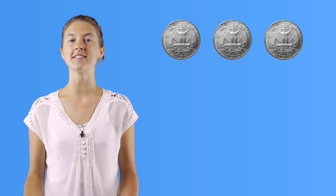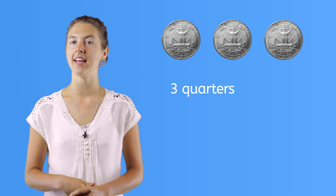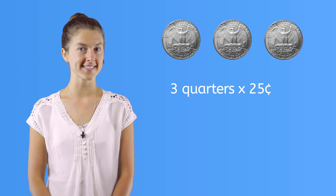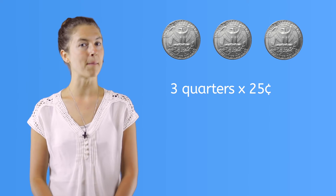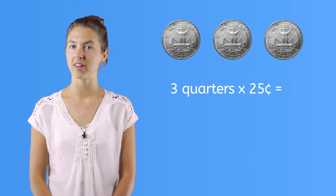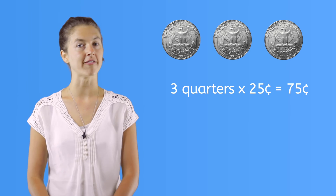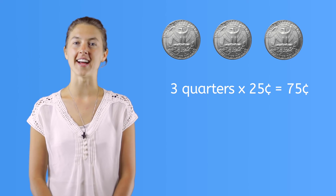When adding quarters, what do you think we'll need to count by? If you said by 25, you're correct! Let's count these quarters: 25, 50, 75. We have 75 cents! And using the shortcut, if we have 3 quarters and multiply that by the value 25, 3 times 25 equals 75 cents!